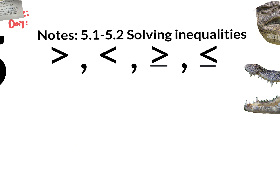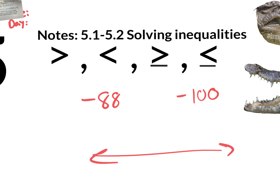If I were to ask you to compare negative 88 with negative 100, which one is greater? If you think about the number line, negative 88 is on the right side and negative 100 is on the left side. So negative 88 is greater because it's on the right side, and the inequality has to open up to the negative 88.